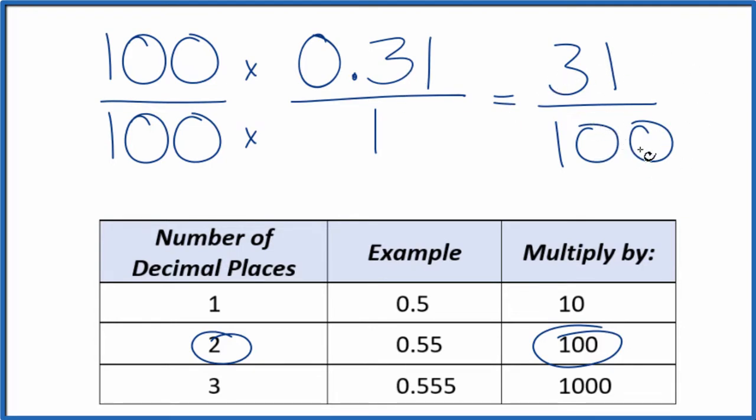And we can't reduce this any further. If you divide 31 by 100, you'll get 0.31.